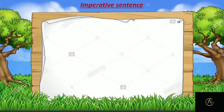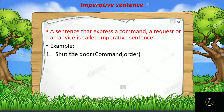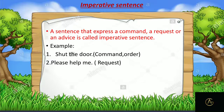Next: imperative sentences. A sentence that expresses a command, a request, or advice is called an imperative sentence. Examples: 'Shut the door' — it is a command, so it is imperative. 'Please help me' — someone is requesting you to help, so it is imperative. 'Do not tell lies' — it is advice, so it is also an imperative sentence.